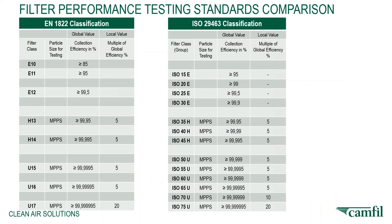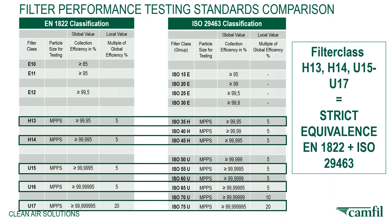According to EN1822 or ISO 29463, we classify our filters and give them certain names. Looking at the comparison here, what would be an H13 filter according to EN1822, which would be 99.95% efficient, would be equivalent to an ISO 35H according to ISO 29463. These are both efficiencies at the MPPS.